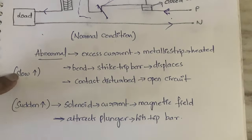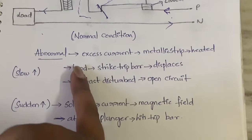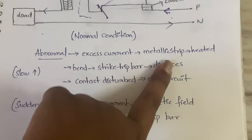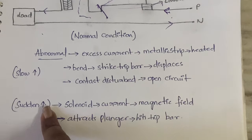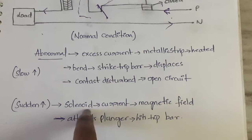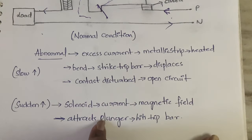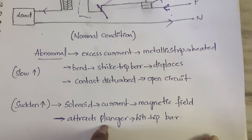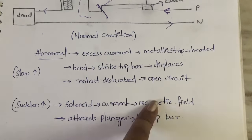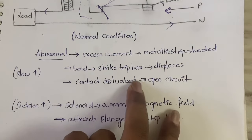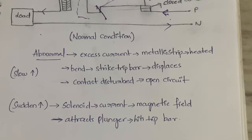To summarize — you can take a screenshot of this: In case of slow increase in current, the bimetallic strip heats up, bends, strikes the trip bar, the trip bar displaces, the contact is disturbed, and it becomes an open circuit. In case of sudden increase, current passes through the solenoid, a magnetic field is generated, the magnetic field attracts the plunger, the plunger hits the trip bar, the contact is disturbed, and it becomes an open circuit. That is all about MCCB.